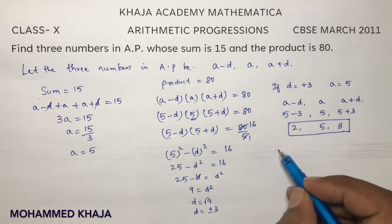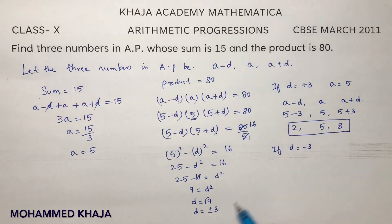Suppose if D is like minus 3, because we got plus or minus. If we will take D as minus 3 and A value is 5...